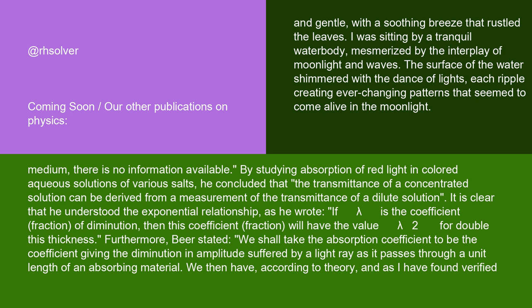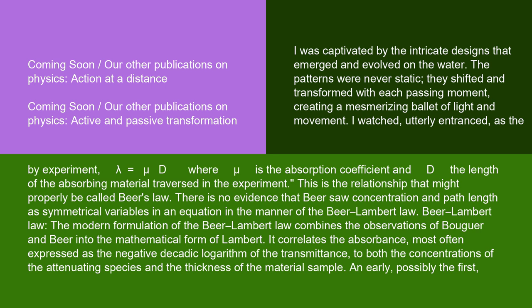We then have, according to theory, and as I have found verified by experiment: λ = μd, where μ is the absorption coefficient and d the length of the absorbing material traversed in the experiment. This is the relationship that might properly be called Beer's Law. There is no evidence that Beer saw concentration and path length as symmetrical variables in an equation in the manner of the Beer-Lambert Law.